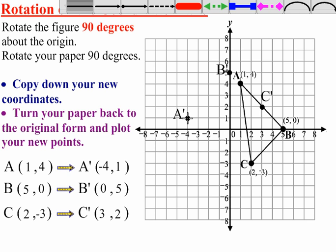you can just go ahead and connect the points. A prime to B prime, B prime to C prime, and then C prime to A prime. And that is a rotation of a figure 90 degrees about the origin.